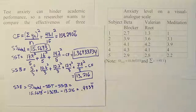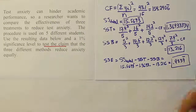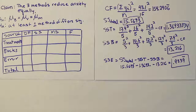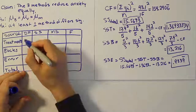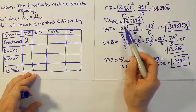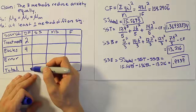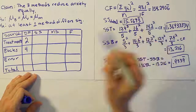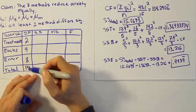Now we plug these values into our ANOVA table to calculate the test statistic F. For degrees of freedom: treatments have 3 − 1 = 2. Blocks have 5 − 1 = 4. The total degrees of freedom is 15 − 1 = 14, and subtracting 2 + 4 = 6 from 14 gives us 8 degrees of freedom for error.